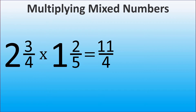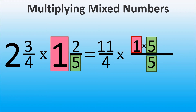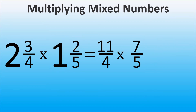Let's do the same with 1 and 2 over 5. We have 1 whole and we can represent a whole as 5 over 5 because we have 5 in the denominator. So we multiply 1 by 5, and then we have to add 2 to that because we initially had 2 in the numerator. 1 times 5 plus 2 is 7, so we have 7 over 5.